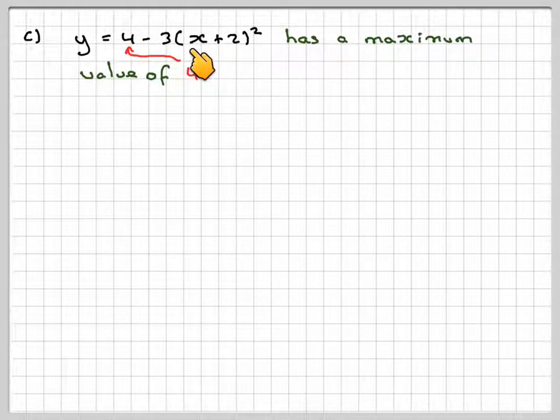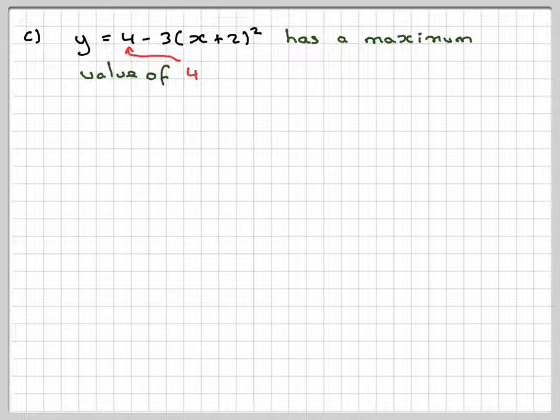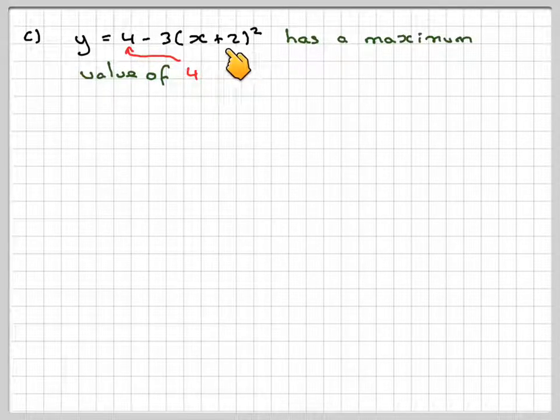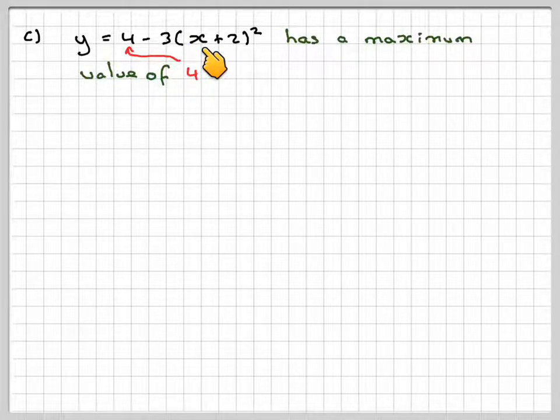3 times a positive number, -3 times a positive number is negative. 4 minus the negative number, then this will get smaller. And therefore, the smallest value this will be is 0, and that will happen when x = -2.